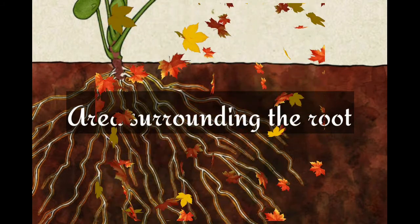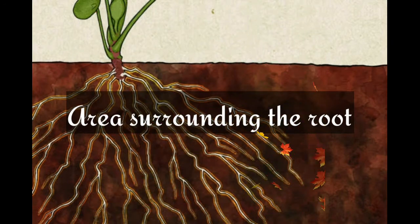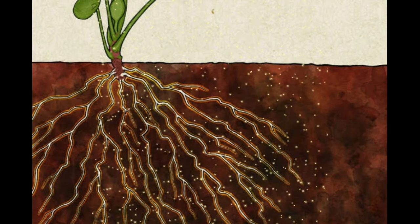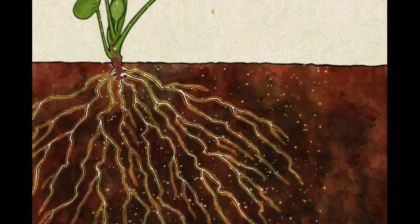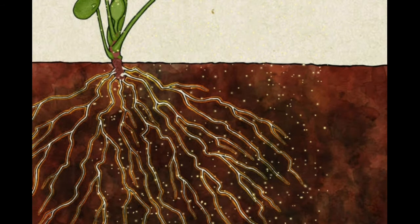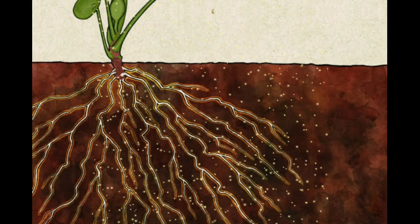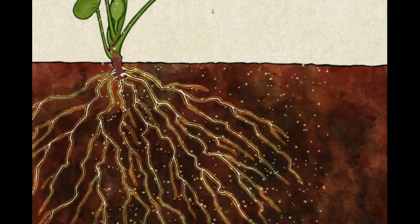Simply put, rhizosphere is just the area around the roots which contains microorganisms. It is the area surrounding the roots which was inhabited or accumulated by microorganisms — such a space or area is known as the rhizosphere.